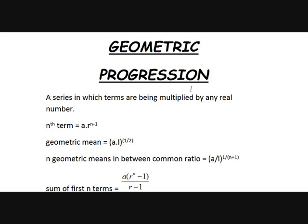Geometric progression — the name seems pretty difficult. Geometric progression is a series in which terms are being multiplied by any real number R, where R is called the common ratio. The first term will be A. The second term is A times R, the third is A times R squared, the fourth is A times R cubed, and the nth term is A times R to the power n minus 1. The geometric mean is the square root of A times L, or A into L to the power 1 by 2, where A is the first term and L is the last term.